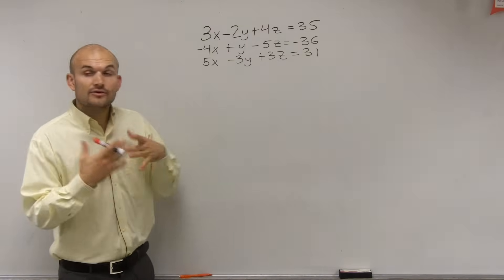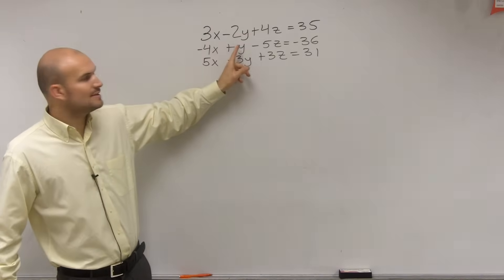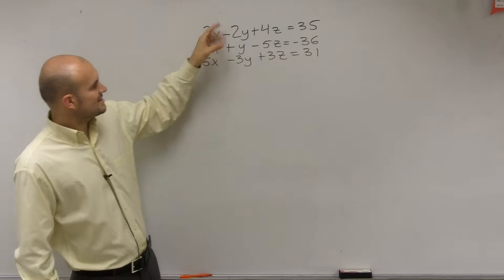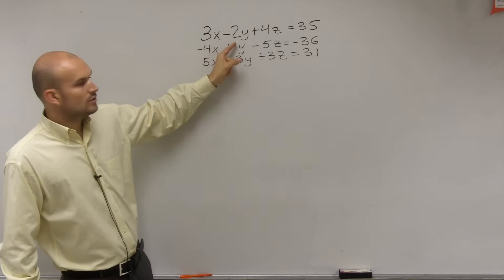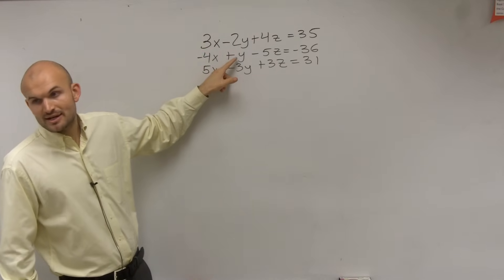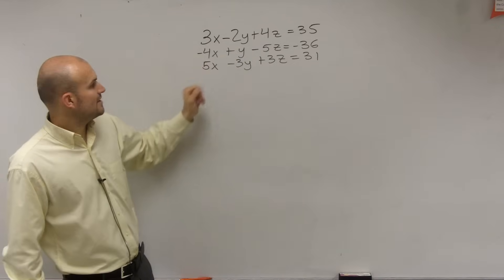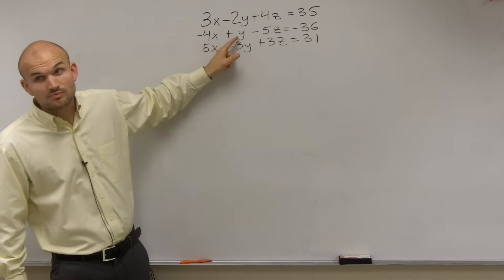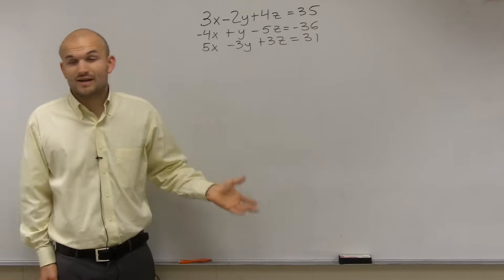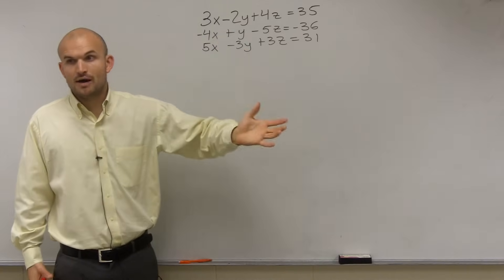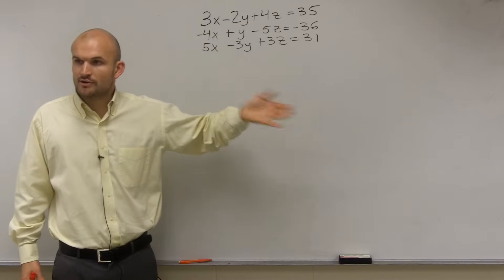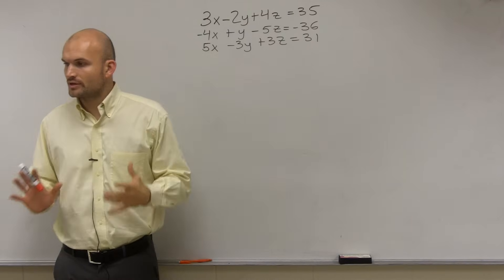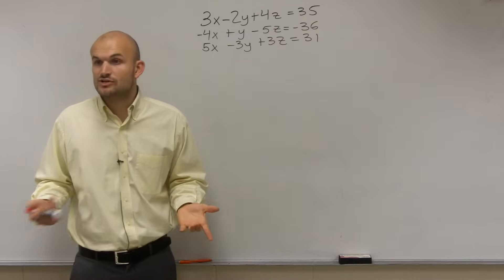The y, right? The reason y is so important is because if I forget about the third equation and just want to eliminate y between the first two equations, all I have to do is multiply by 2. And if I want to eliminate y between the second and third equations, all I have to do is multiply by 3. So pick a variable that has a coefficient of 1.